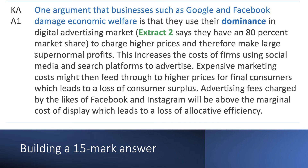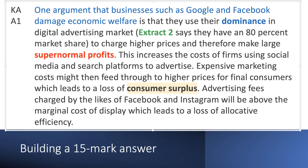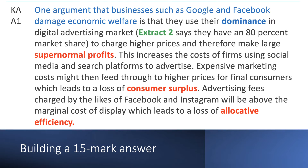Thinking about that paragraph, I've brought in the concept of supernormal profits — I'll highlight these concepts in red. I've talked about costs, consumer surplus, and allocative efficiency. These firms use their monopoly power to raise price above cost. Don't be afraid to bring in these important theoretical ideas: supernormal profit, consumer surplus, and allocative efficiency — these are exactly what examiners are looking for.